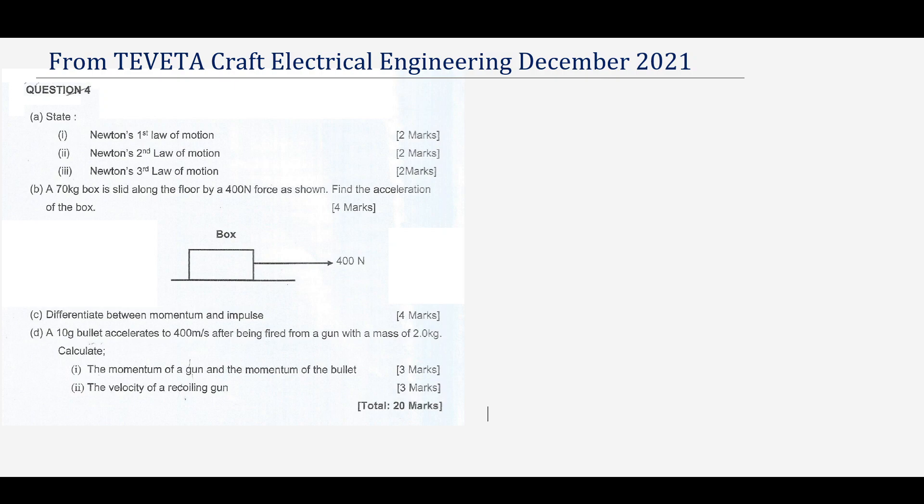Part B is saying: a 70 kg box is slid along the floor by a 400 newton force as shown — find the acceleration of the box. Since we have not been given the coefficient of friction, let's just write what we've been given.